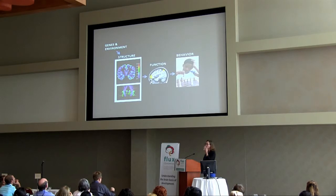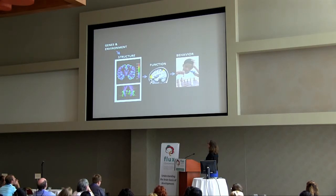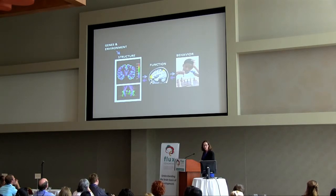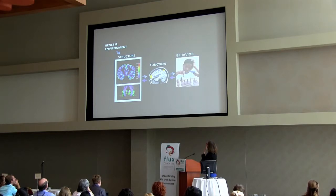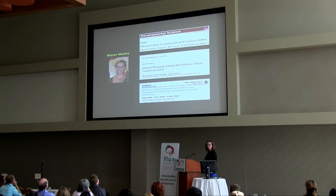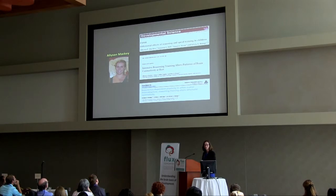We talk about how the brain is built in terms of unidirectional arrows from genes and environment to structure to function to behavior, but obviously these arrows go both ways. What interests us most — and is actually the theme of this session — is the way in which experience can shape the brain. We now have three papers from Allison Mackey looking at how experience with reasoning can change both behavior and brain structure and brain function.